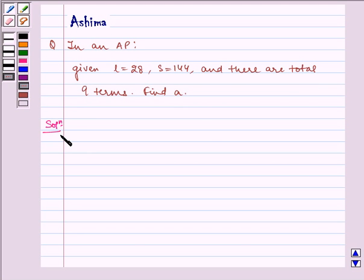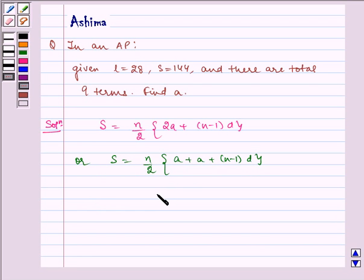Now let us write the solution. We know that sum of N terms, that is S, is equal to N by 2 multiplied by 2A plus N minus 1D. We can also write this as S is equal to N by 2 multiplied by A plus A plus N minus 1D. Now, this is the Nth term, so it can be written as S is equal to N by 2, A plus AN.